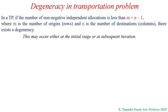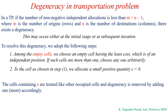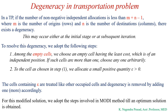This degeneracy may occur either at the initial stage or at a subsequent iteration. To resolve this degeneracy, we adapt the following steps. First, among the empty cells, we choose an empty cell having the least cost which is in an independent position. If such cells are more than one, we choose randomly. Second, to the cell chosen in step 1, we allocate a small positive quantity epsilon, which is greater than 0. The cells containing epsilon are treated like other occupied cells and degeneracy is removed. For this modified solution, we adapt the steps involved in the MODI method until an optimum solution is obtained.